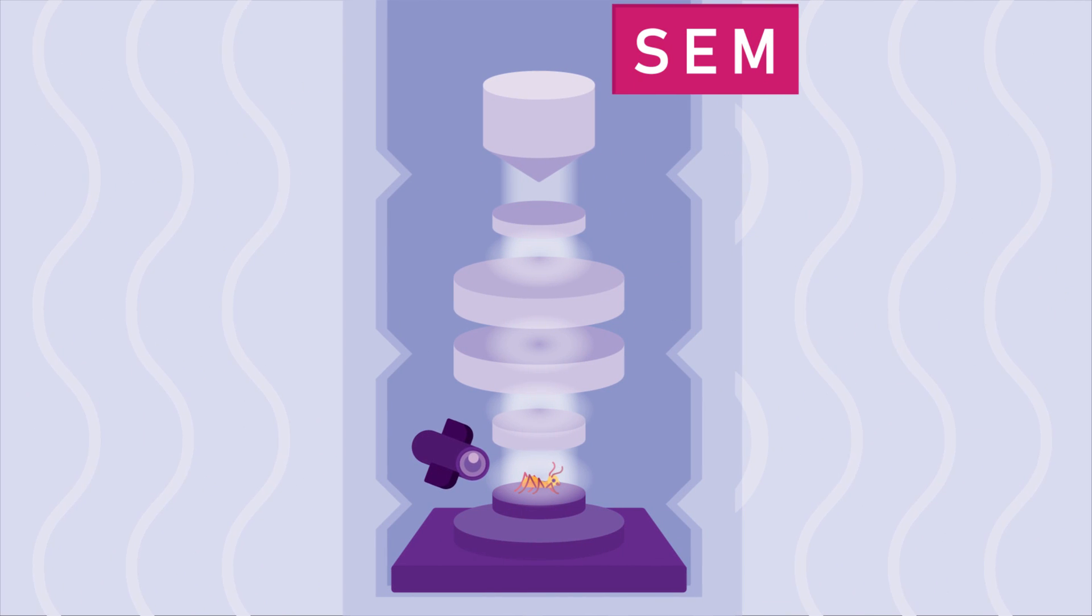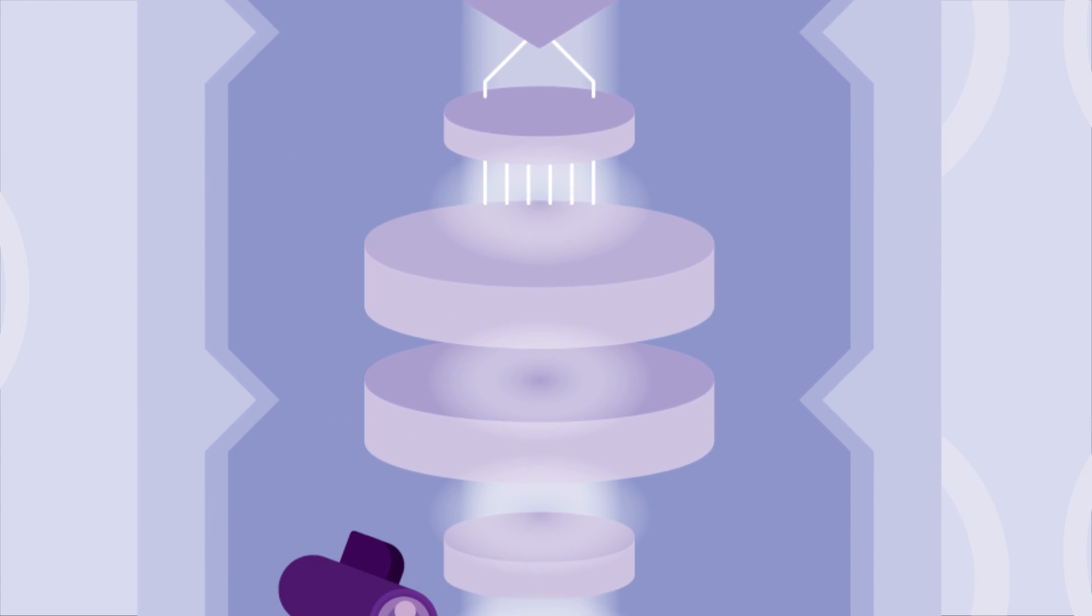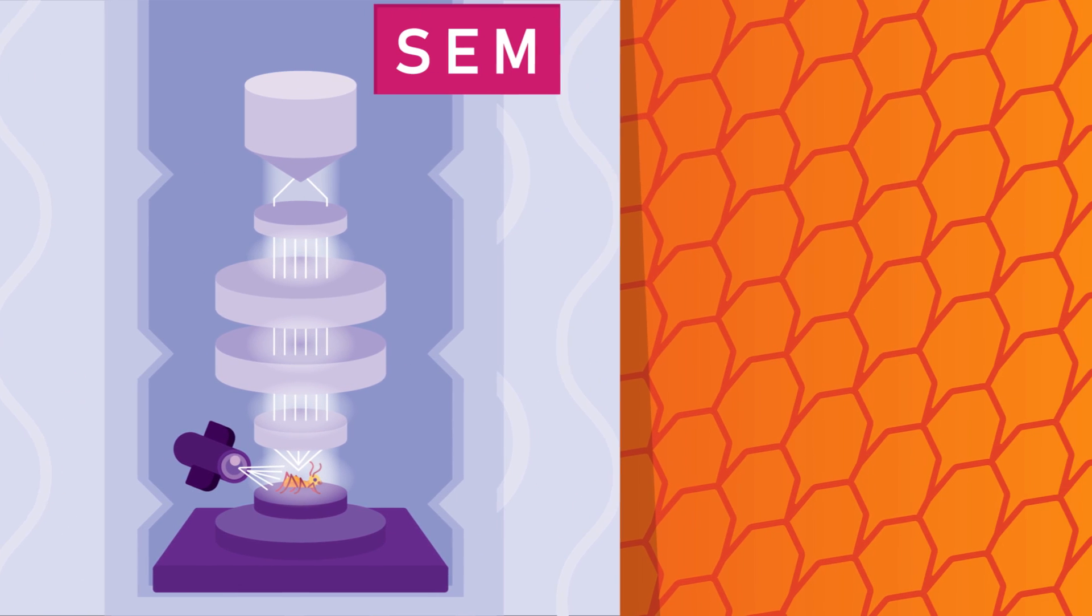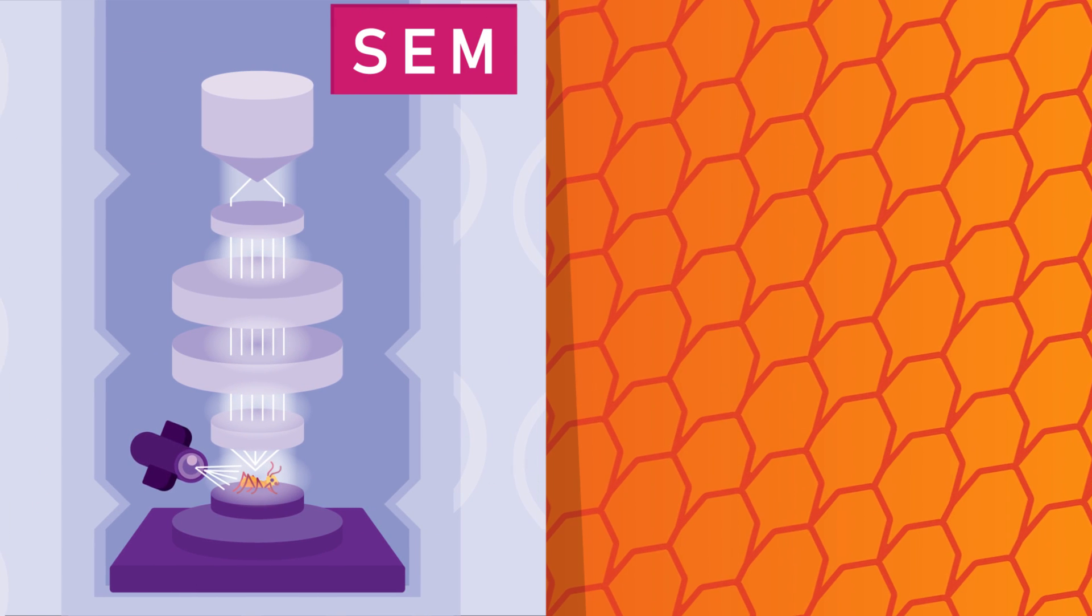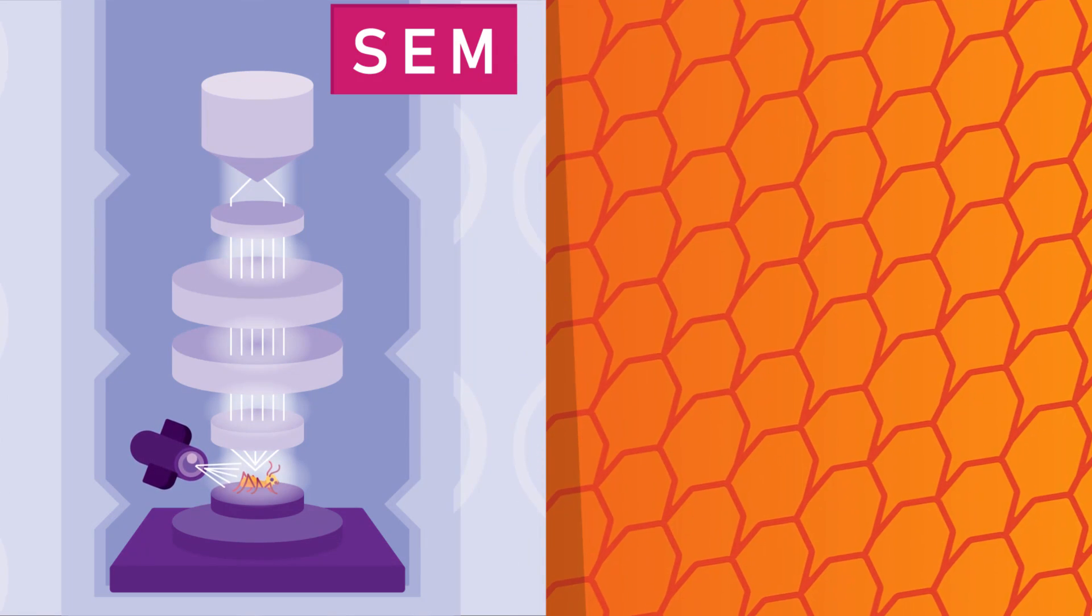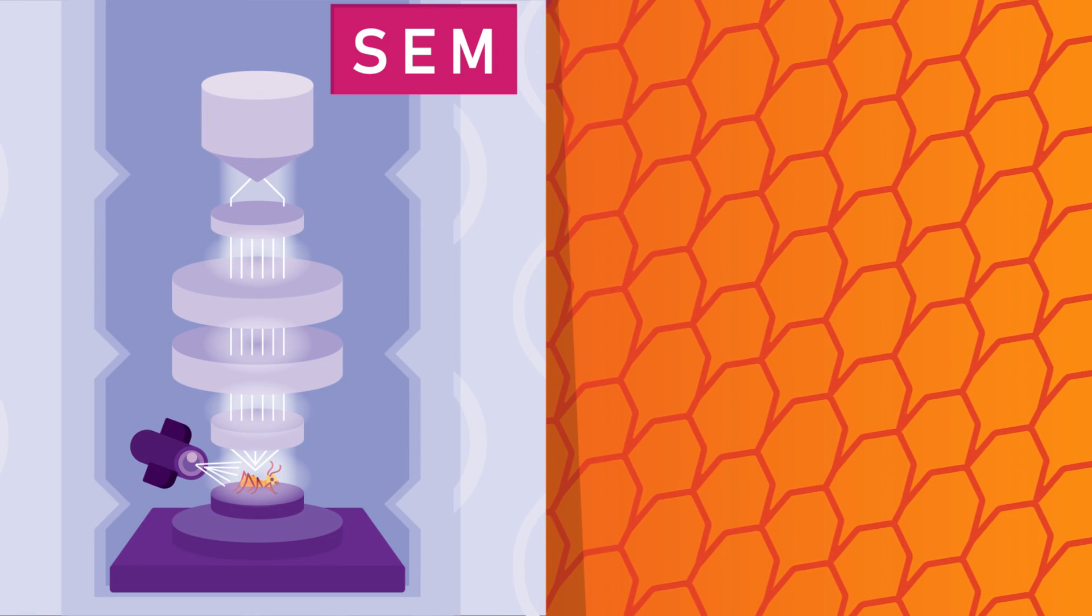In a scanning electron microscope, the electron beam is used to scan the surfaces of structures, and only the reflected beam is observed. The advantage of this is that surface structure, for example, like the chitinous outer body of insects, can be seen in great detail.